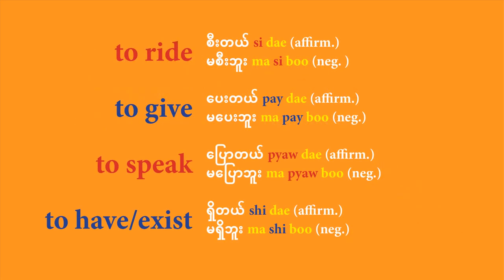For example, 'pe' means to give — the negative form is 'mapebu.' 'Pyo' means to speak — the negative form is 'mapyobu.' 'Shi' means to have or to exist — and the negative form is 'mashibu.'